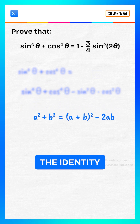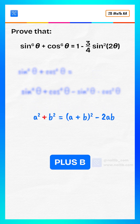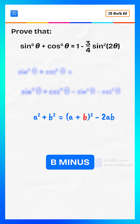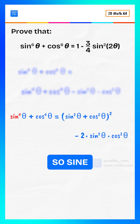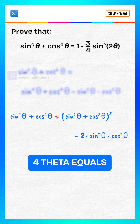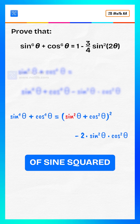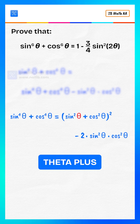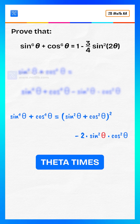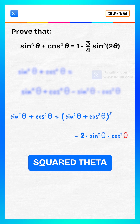We use the identity a squared plus b squared equals the square of a plus b minus two times a times b. So sine to the power four theta plus cosine to the power four theta equals the square of sine squared theta plus cosine squared theta minus two times sine squared theta times cosine squared theta.